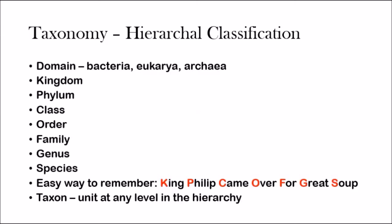Also important in taxonomy is hierarchical classification, a system scientists use to classify organisms. You start broad and get more specific with each level: domain, kingdom, phylum, class, order, family, genus, and species. The domain is the most broad unit and species is the most specific. There are three domains: Bacteria, Eukarya, and Archaea. An easy mnemonic to remember the classification order is: 'King Philip came over for great soup,' where the first letter of each word matches each level.